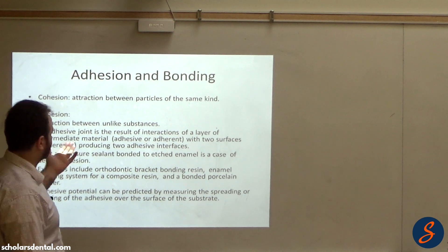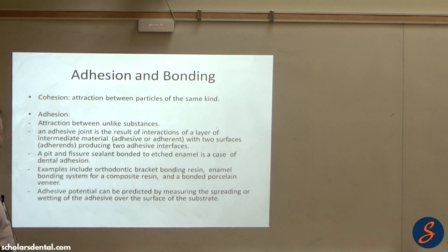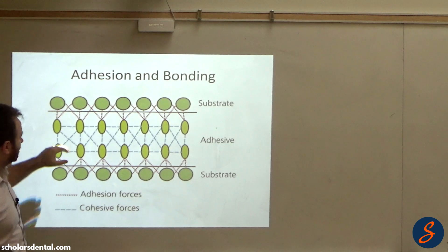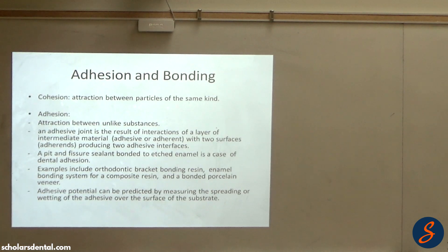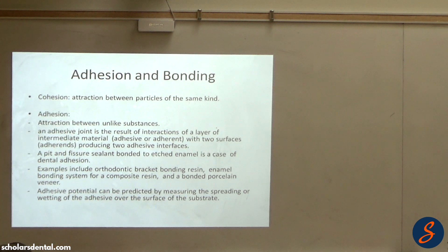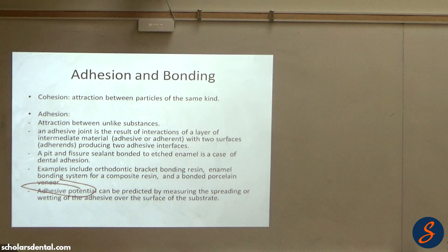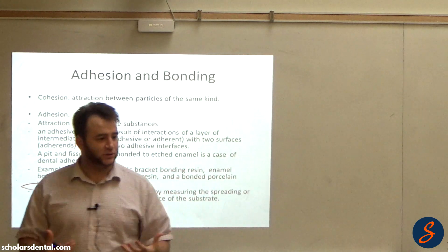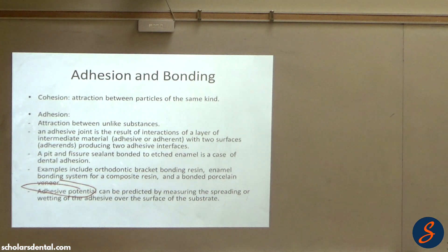This is called an adhesive joint: a layer of intermediate adhesive with two adherent surfaces all adhered together. A pit and fissure sealant is an example — pretty much anything we adhere to the tooth is an example of adhesion. The question is: how do we assess the quality of that adhesion — is it good or poor, weak or strong?